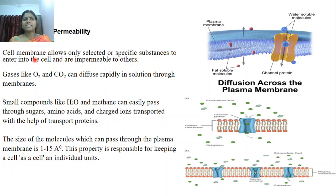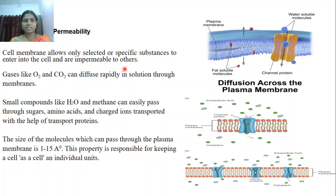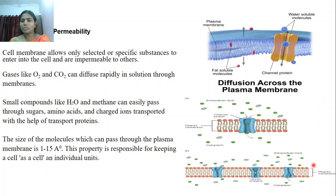The next function is selective permeability. The cell membrane allows only selected or specific substances to enter or pass through the cell, and is impermeable to other substances — that phenomenon we call selective permeability. Gases like oxygen and carbon dioxide can diffuse rapidly through the cell membrane.